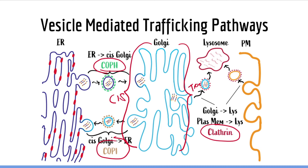For example, proteins destined for the mitochondria have special localization sequences which bind proteins already located on the surface of the mitochondria. So in summary, there are two main mechanisms of protein trafficking which depend on which ribosome the protein is made in.